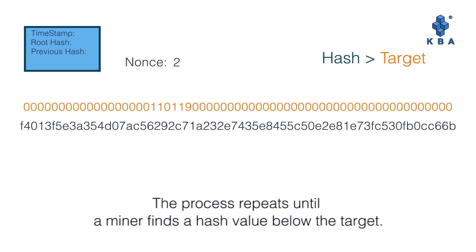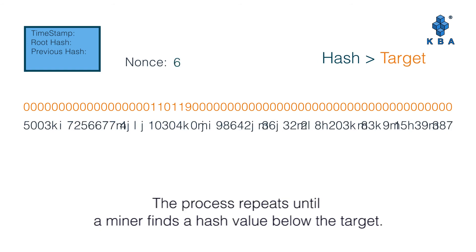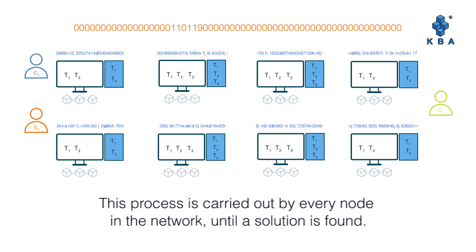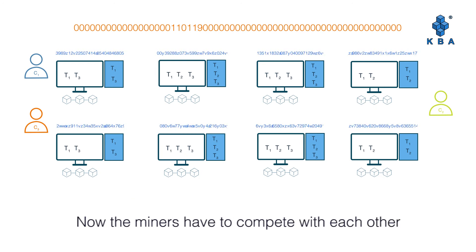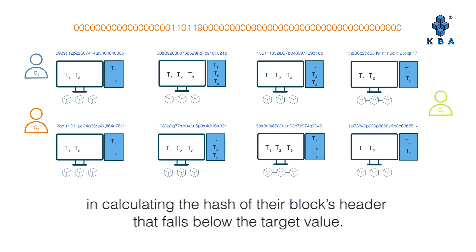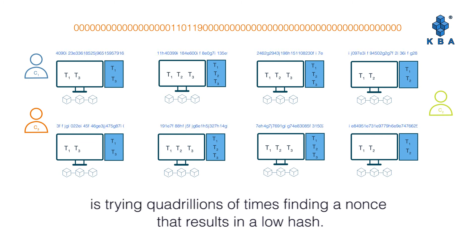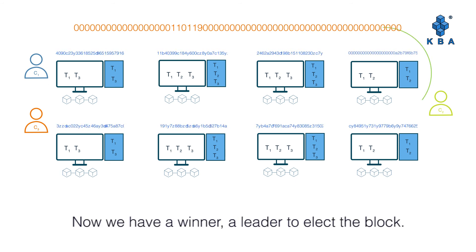Because our aim is to find a hash below the target value, this process repeats until a miner finds a hash value below the target. This process is carried out by every node in the network until a solution is found. The miners compete with each other, calculating the hash of the block's header until it falls below the target value. The difficulty of the work is trying quadrillions of times to find a Nonce that results in a low hash. Now we have a winner — a leader to propose the block.